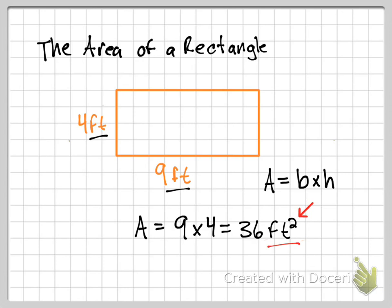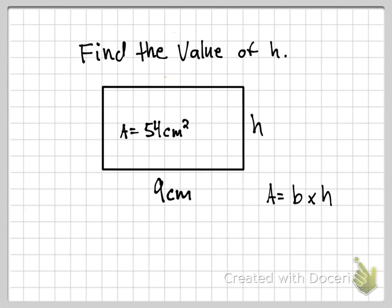For this next problem, we are asked to find the value of H. We are given that the area of the rectangle is 54 centimeters squared and we have the base. So we have the area and the base; we just have to find the height. I'll plug in the values: 54 equals 9 times h.